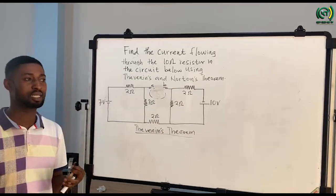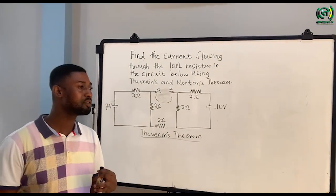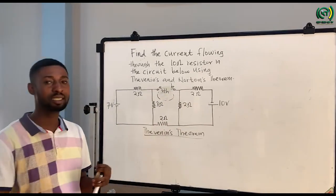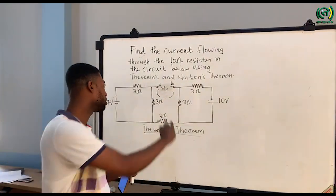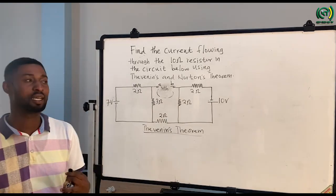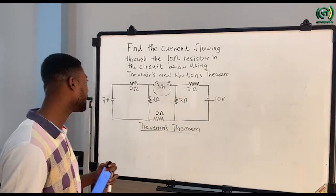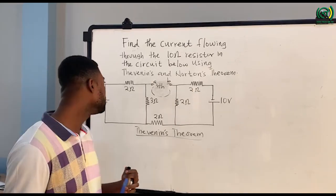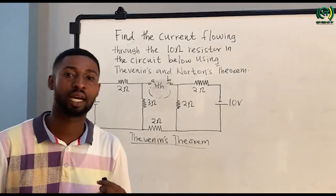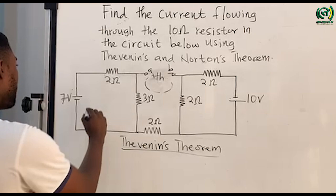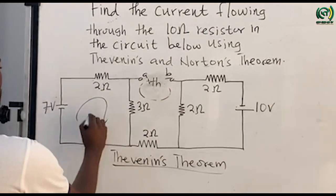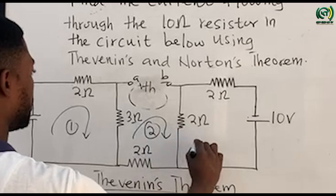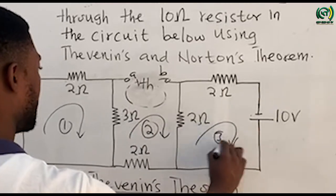Once we are done with this, we are supposed to find Thevenin's voltage, which is Vth — the voltage seen between the terminals. To calculate Vth, we are supposed to use Kirchhoff's Voltage Law, and using Kirchhoff's Voltage Law we can introduce loops. So we'll have loop one, two, and three.